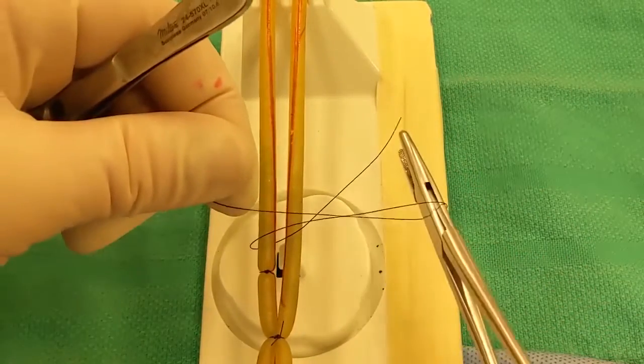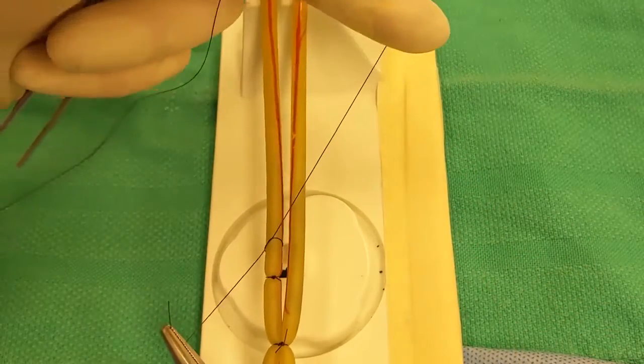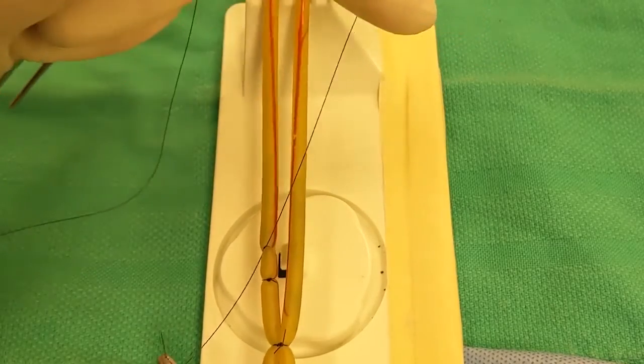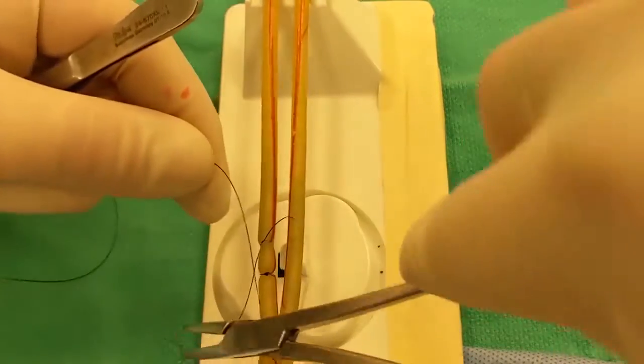So we'll throw a regular square knot here, two throws. And there's a couple different ways to do transfixations, but we're teaching you to throw a full square knot on this side.